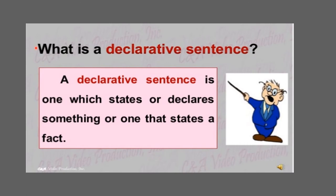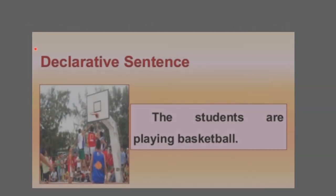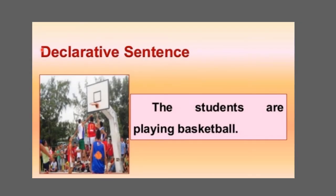What is a declarative sentence? A declarative sentence, also called an assertive sentence, is one which states or declares something — it states a fact. A declarative sentence can be affirmative or negative; it can give positive or negative information. Example: 'The students are playing basketball.' This is a declarative, affirmative sentence.